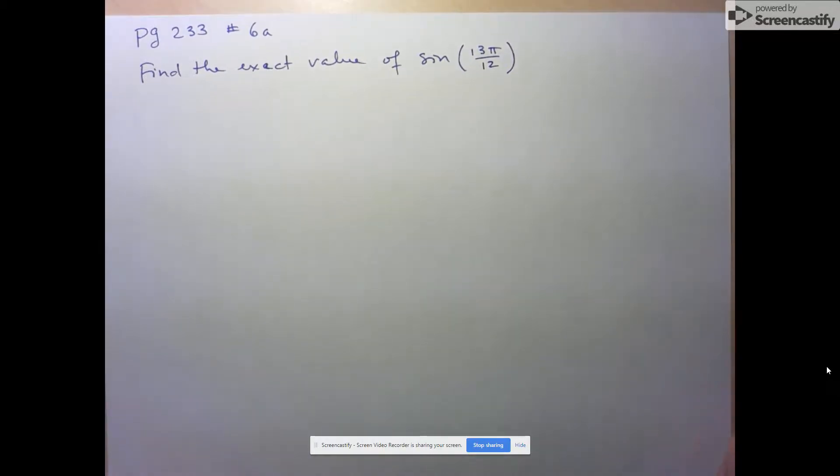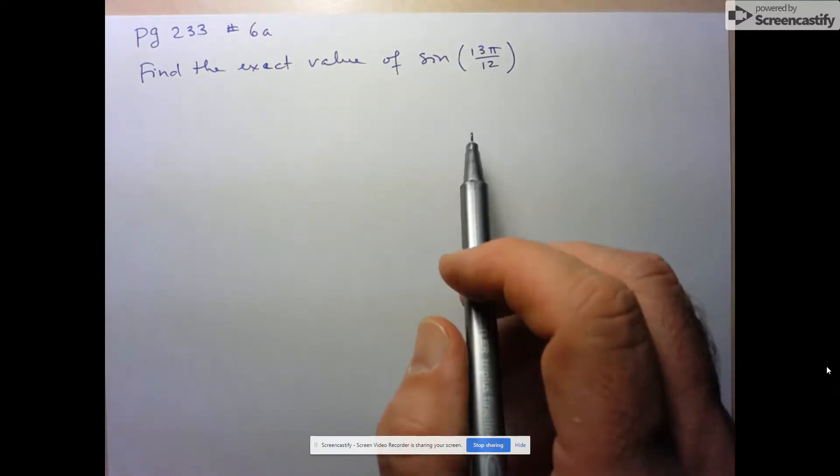Hi folks, we're going to take a look at number 6A from page 233. They're asking us to find the exact value of sine of 13π over 12.